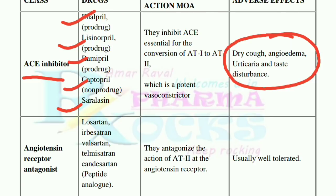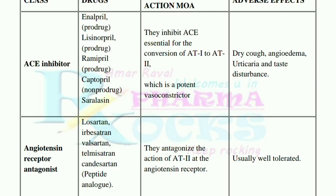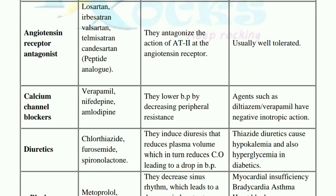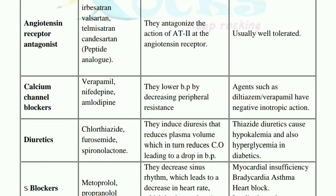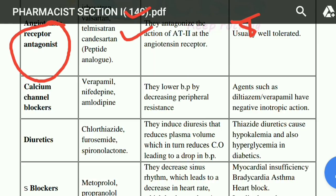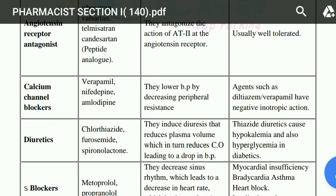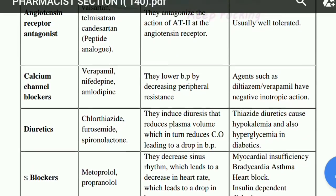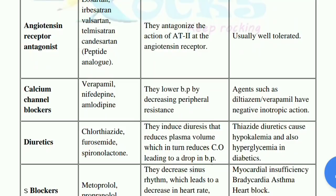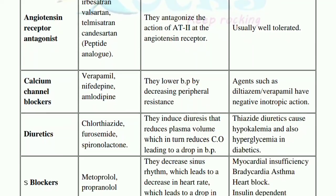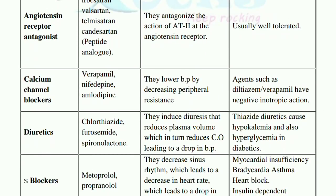The next important class is the angiotensin receptor antagonists, also known as all the '-sartans'. Examples are losartan, valsartan, etc. Pichhe aap dekh sakte hoon ki sabhi ke pichhe ek common word hai — wo hai 'sartan'. So all the sartans are angiotensin receptor antagonists.